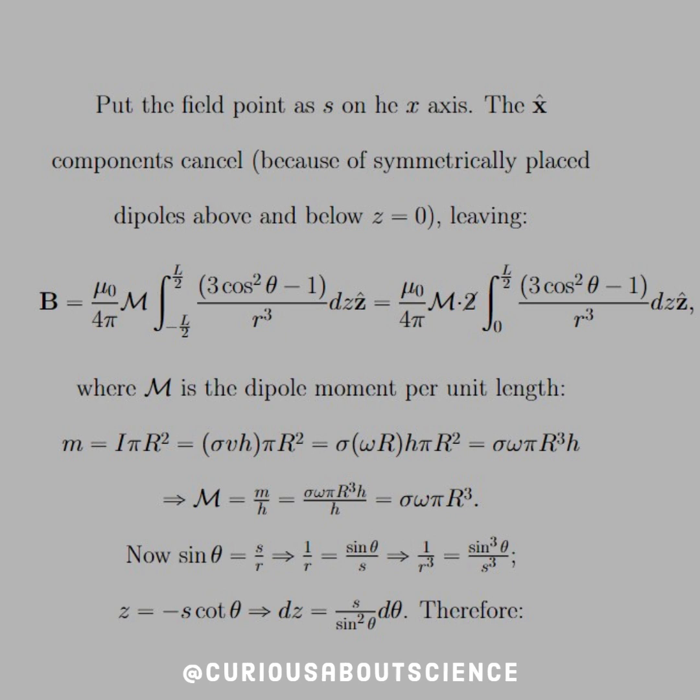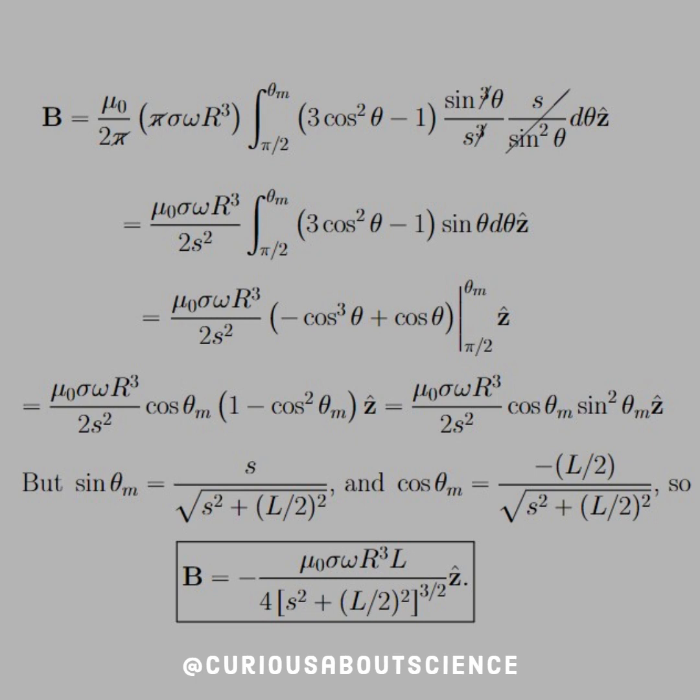So now, again, we know from basic definitions of the trig functions that sine of theta equals s over r, therefore one over r equals sine theta divided by s. Alright, why does this matter? We have a one over r cubed term in the integral, so let's cube both sides of this, yielding one over r cubed equals sine cubed theta over s cubed. And similarly, we have a z term that we need to have a differential element for, so we know that z equals negative s cosine theta. Take the derivative, we get dz equals s over sine squared d theta.